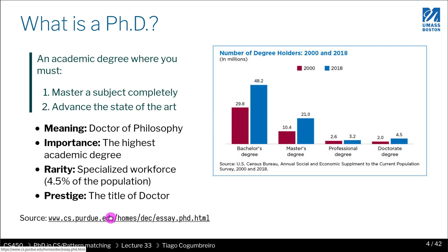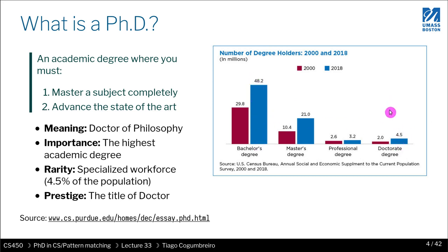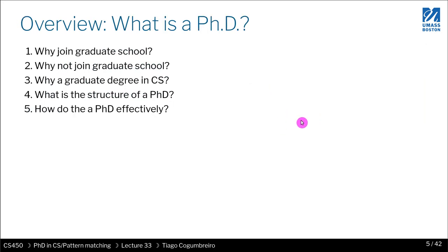I also provide a source that I would suggest you read. This is basically a graph showing the percentage of population per degree. As you can see, in 2018, around 50% of people had a bachelor's degree, a PhD just 4.5%, and a master's degree just 20%.